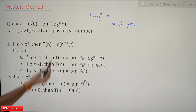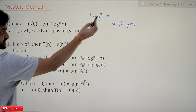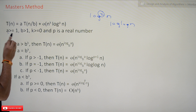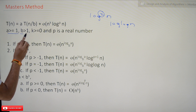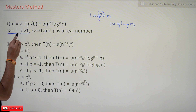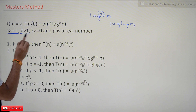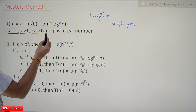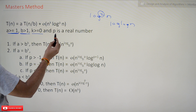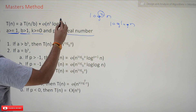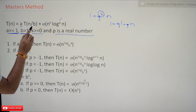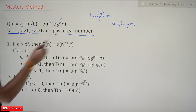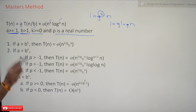If the recurrence is of this form, and a is greater than 1, b is greater than 1, k is greater than or equal to 0, and p is a real number — where a, b, k, and p are these values — then we have to check certain conditions that must be satisfied.